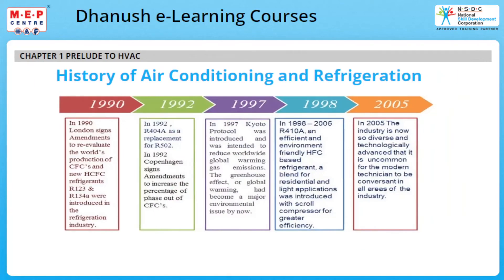In 1990, London signed amendments to re-evaluate the world's production of CFCs, and new HCFC refrigerants R-123 and R-134A were introduced in the refrigeration industry. In 1992, R-404A was introduced as a replacement for R-502, and Copenhagen signed amendments to increase the percentage of phase-out of CFCs. In 1997, the Kyoto Protocol was introduced to reduce worldwide global warming gas emissions. The greenhouse effect and global warming had become a major environmental issue by now.